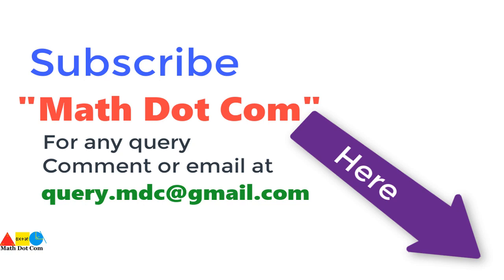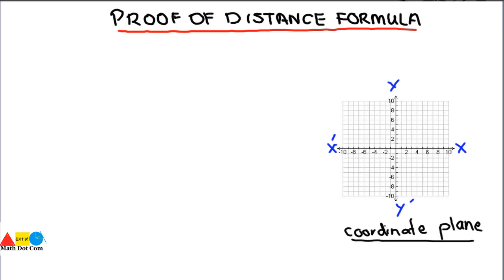Hello everyone. Today's lecture is on one of the concepts of coordinate geometry, that is the distance formula. The distance formula is basically used in coordinate geometry, which deals with the study of geometrical shapes in a Cartesian plane with the help of ordered pairs. We will discuss how you can find the proof of the distance formula, which is used to find the distance between two points.